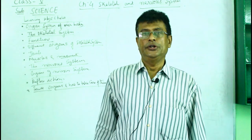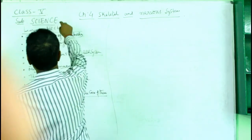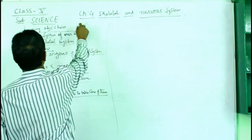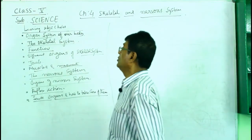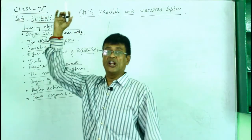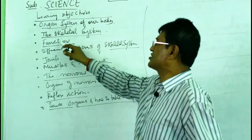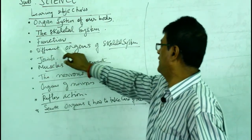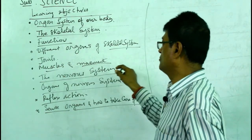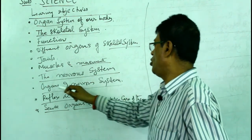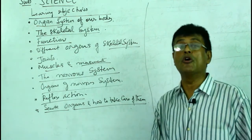Hello children, today we have to discuss about Class 5, Chapter 4 - Insights: The Skeletal and Nervous System. Our learning objectives include organ systems of our body, the skeletal system, functions of the skeletal system, different organs of the skeletal system, joints, muscles and movement, the nervous system, organs of the nervous system, reflex action and sense organs, and how to take care of them.